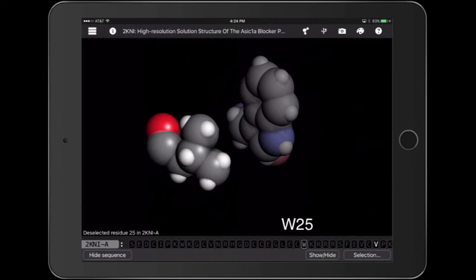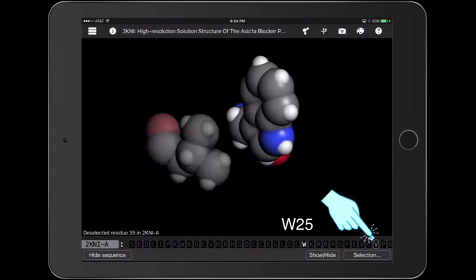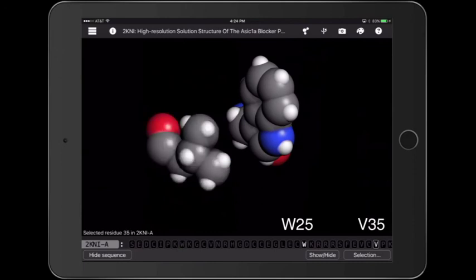Now I want to know what they are, so I touch the names that are highlighted in the sequence viewer to see what these amino acids are, and I see we have tryptophan 25 and valine 35.